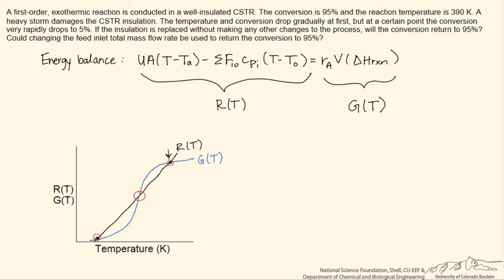We don't necessarily know that we're at this point with multiple intersections. We just know that at least one intersection, so the R of T curve could be shifted over significantly to the right. We just know that we're operating at pretty high conversion initially.